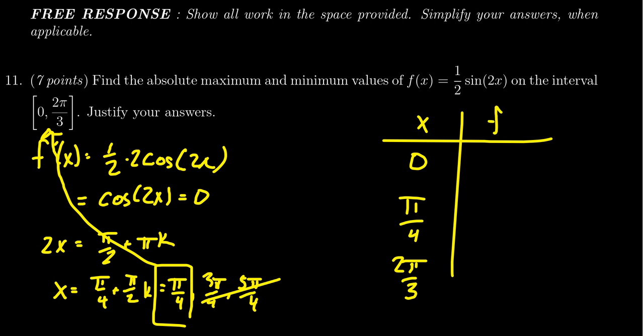Then we'll put these into the function f(x). At x=0, we get (1/2)sin(0) = 0. For the next one, at x=π/4, we get (1/2)sin(2 × π/4) = (1/2)sin(π/2). Since sin(π/2) = 1, we get a value of 1/2.